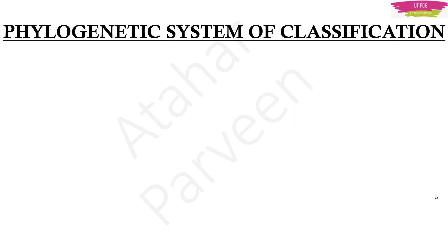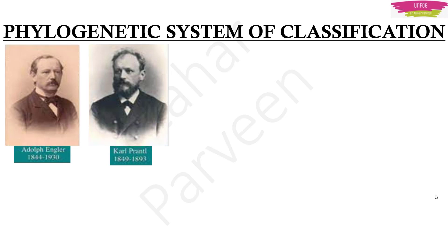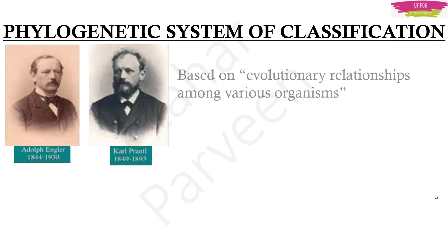Moving on, we have the phylogenetic system of classification, given by scientists Adolf Engler and Karl Prantl. You will have to remember the system of classification and the names of the scientists — this can be asked, it's very important. Phylogenetic means relating to evolutionary development. It is based on the evolutionary relationships among various organisms — for example, human beings (Homo sapiens) and monkeys share an evolutionary relationship.